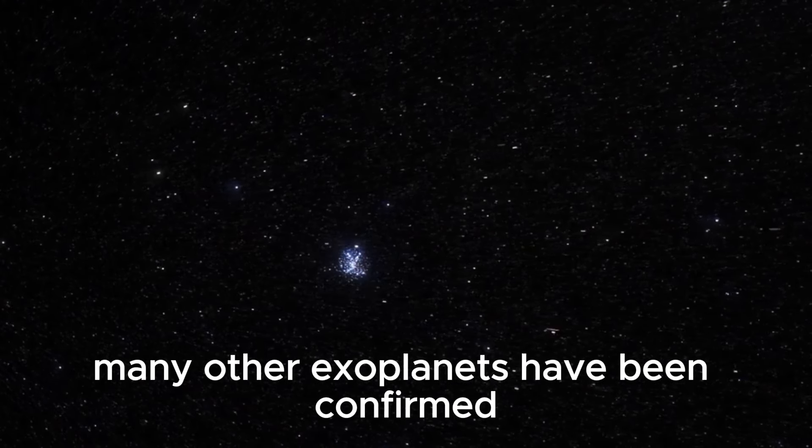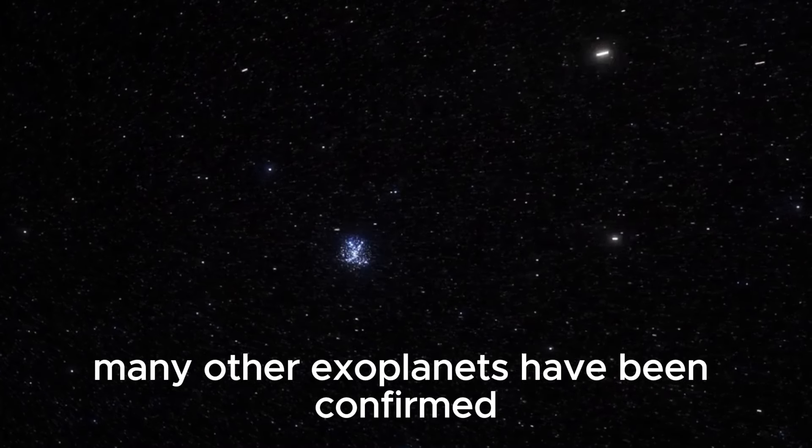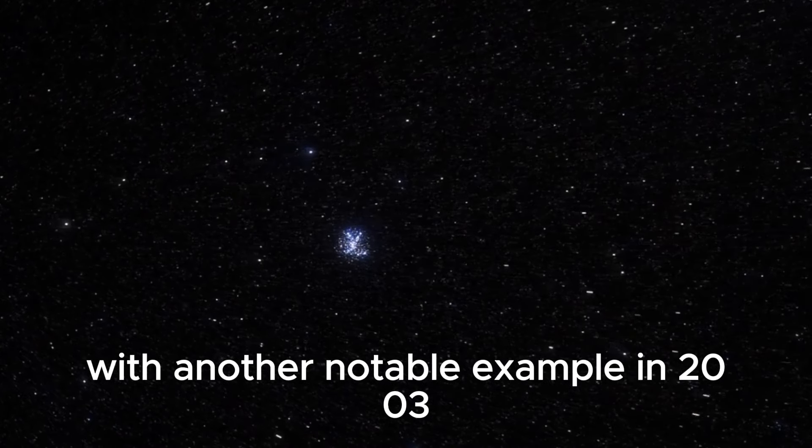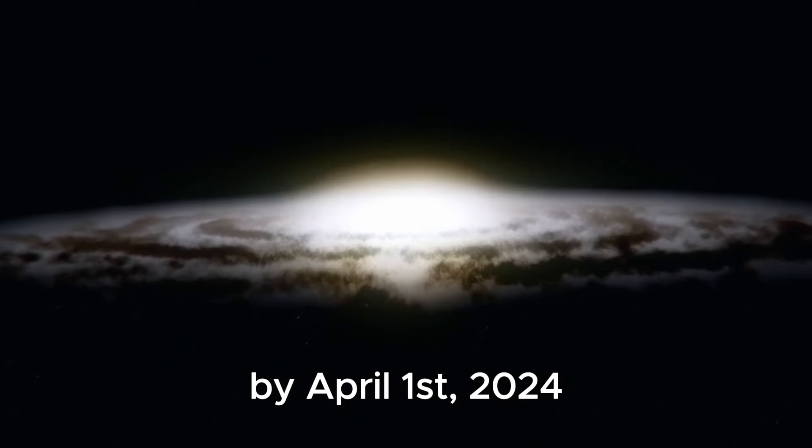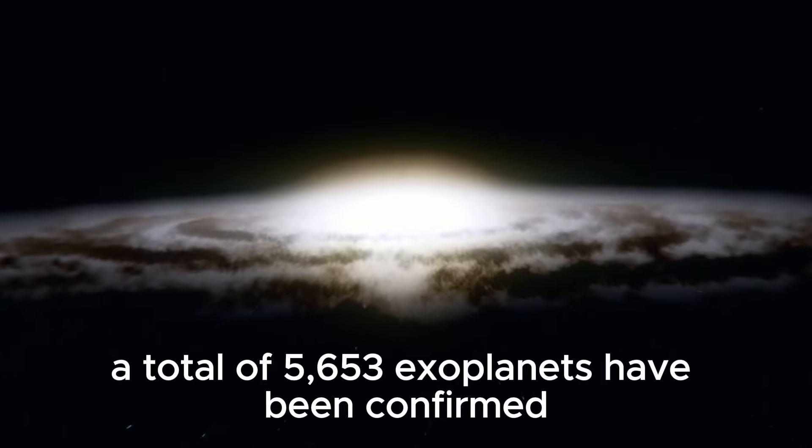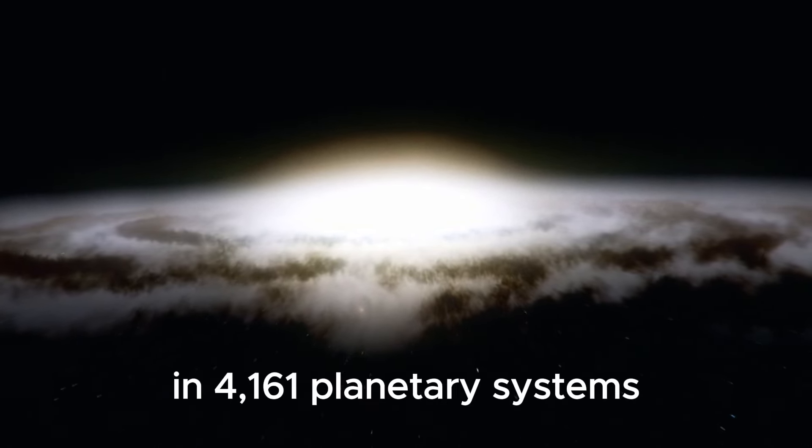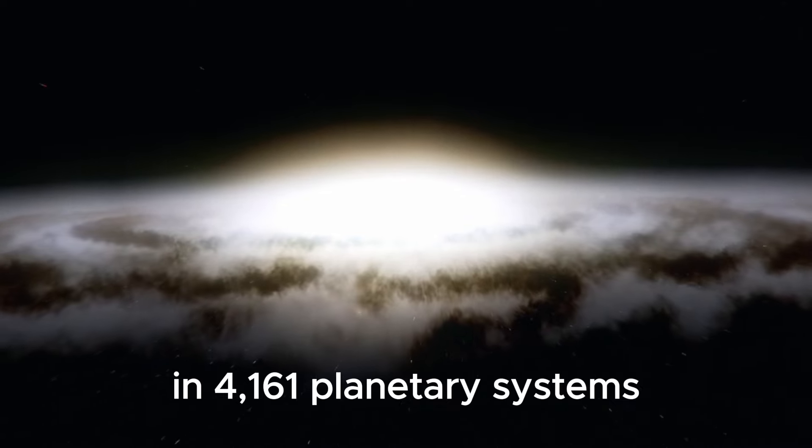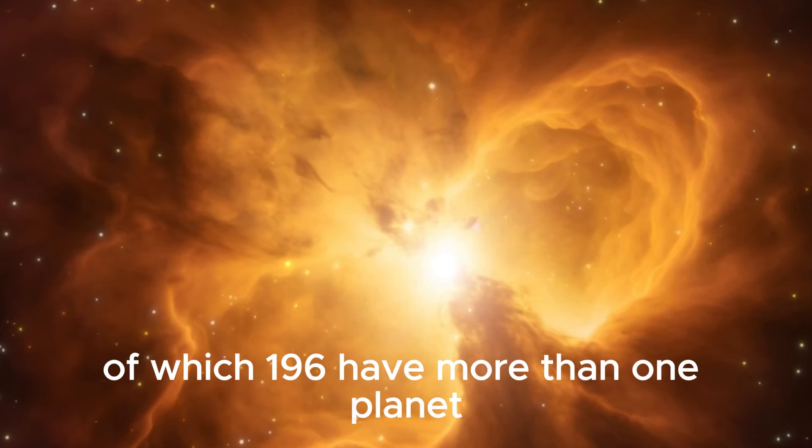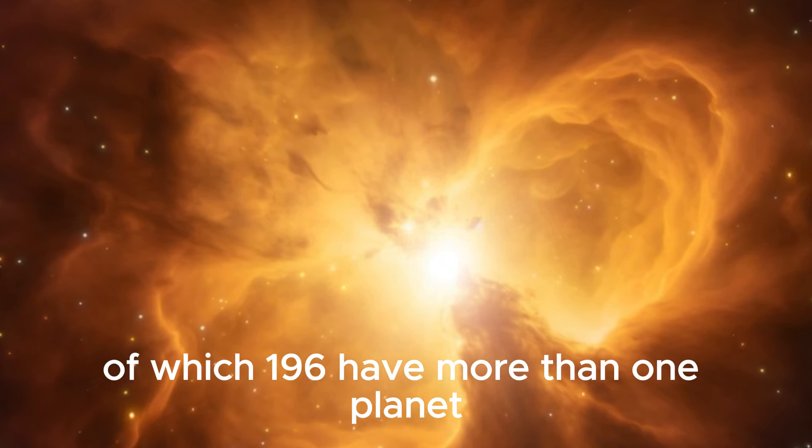Since then, many other exoplanets have been confirmed, with another notable example in 2003. By April 1, 2024, a total of 5,653 exoplanets have been confirmed in 4,161 planetary systems, of which 196 have more than one planet.